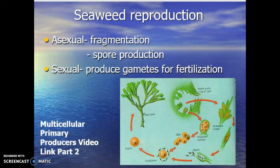Here's our second part in the lecture on multicellular primary producers — seaweeds, or macroalgae. Both terms work, along with the marine flowering plants. In the first lecture, we talked about how we identify a macroalgae, the key features, and then the differences between the green, brown, and red algae. We left off with methods of reproduction — asexual versus sexual. Sometimes algae do both; other times they favor one method versus the other.